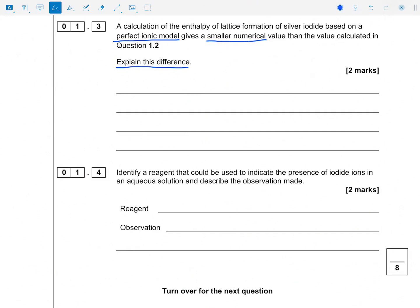So if it's smaller numerical value, enthalpy of lattice formation, well that's going to be a negative value, so it's probably going to be less negative. But we need to think about why. So if you're familiar with experimental data versus the perfect ionic model data, then it shouldn't be too taxing to get two marks out of this explaining the difference, why those differences occur.